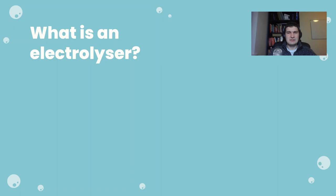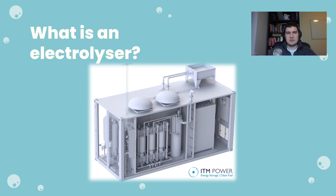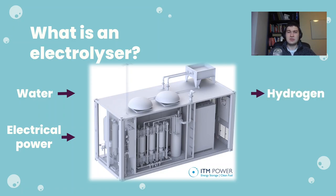So what is an electrolyzer? Well, an electrolyzer is a device that takes water and it takes electrical power and it uses the electrical power to split the water into its constituents which are hydrogen and oxygen.